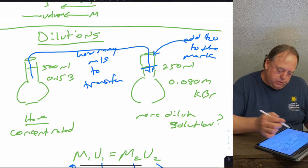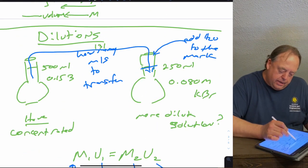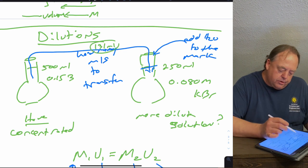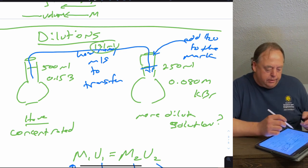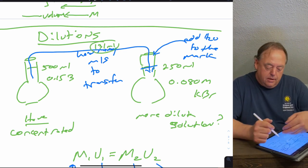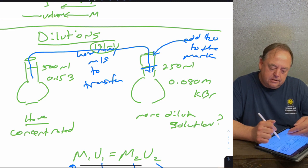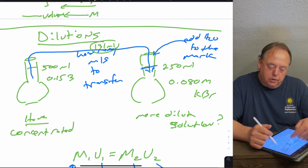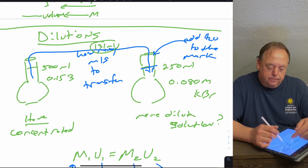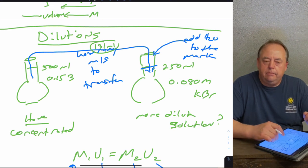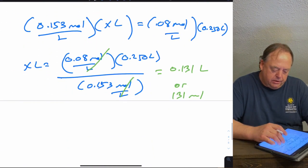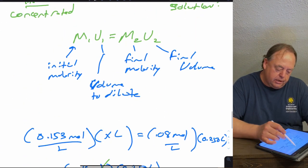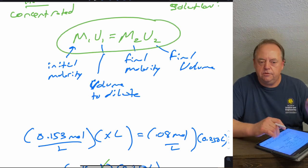So you would pipette out 131 mL from the concentrated solution, pipette it into the volumetric flask for the dilute solution, and then add water to the 250 mL mark. You would then have a 0.080 molar solution of KBr. Anytime you need to do a dilution, just remember the equation M₁V₁ = M₂V₂.